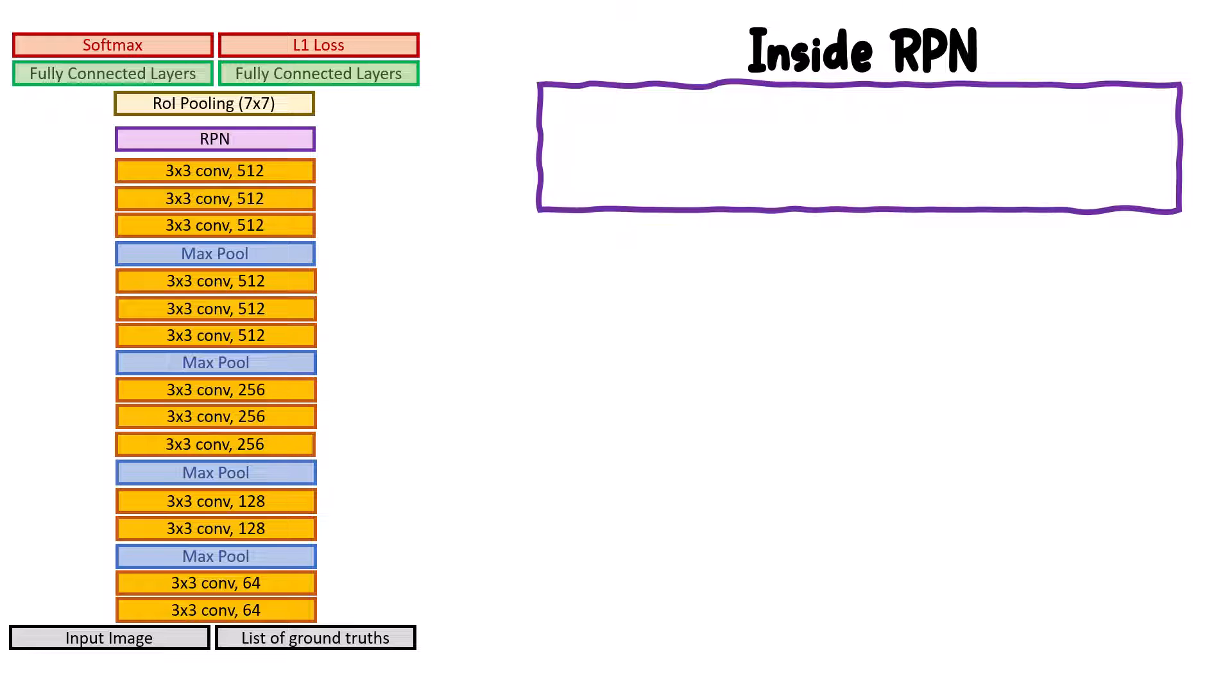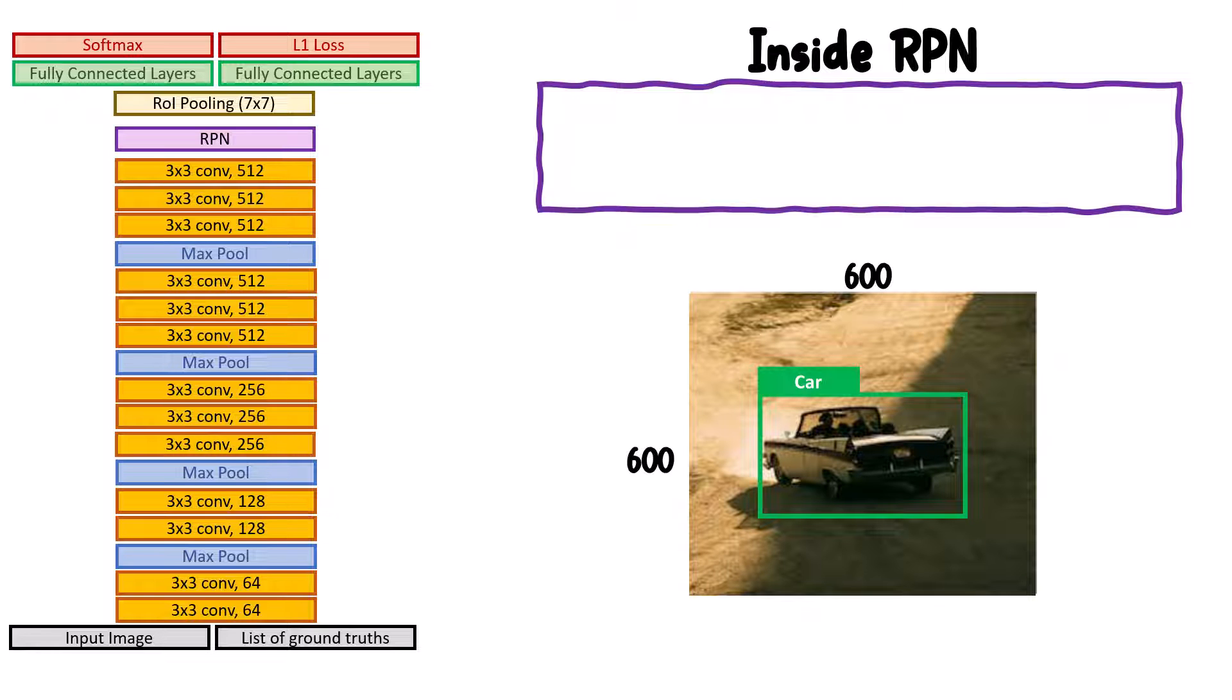Assuming that we have a beautiful car as an input image with a ground truth, let's see what our current model does. By the way, the reason why I say the spatial dimension is 600 by 600 is because in the paper they resize the image such that the lowest dimension is 600, so one of width or height should be 600 and the other could be larger.